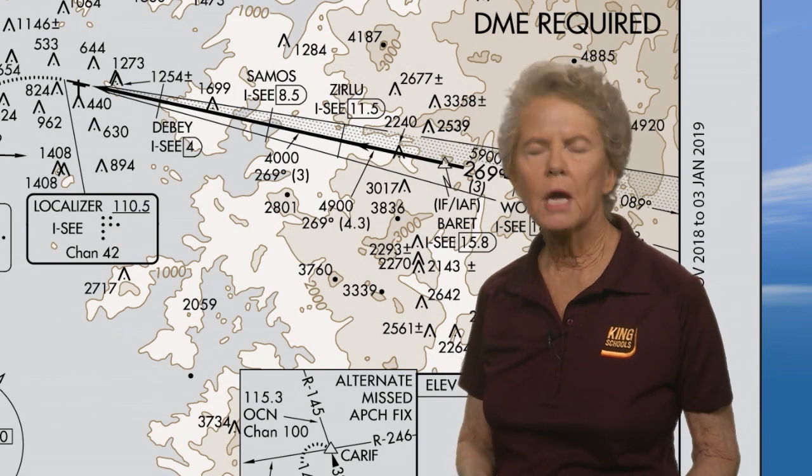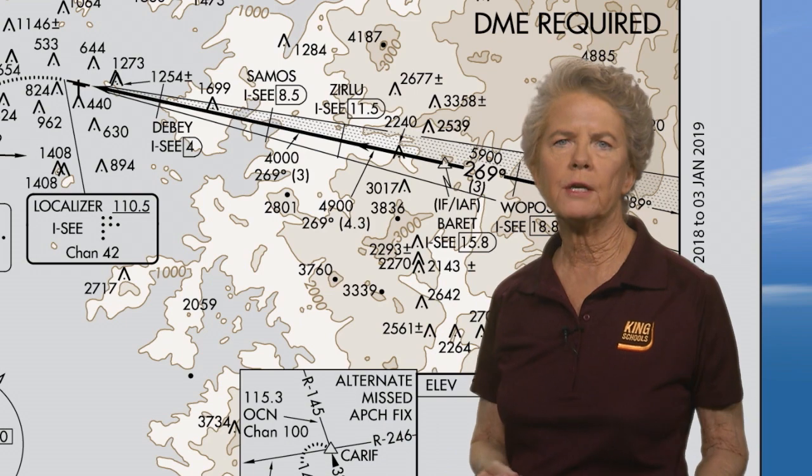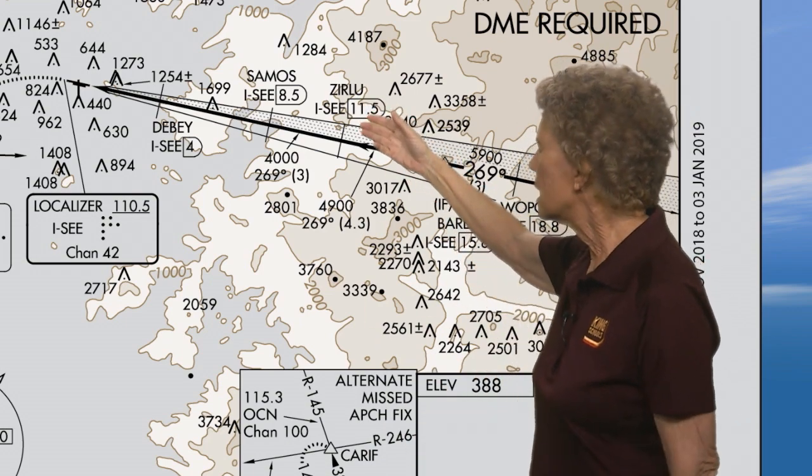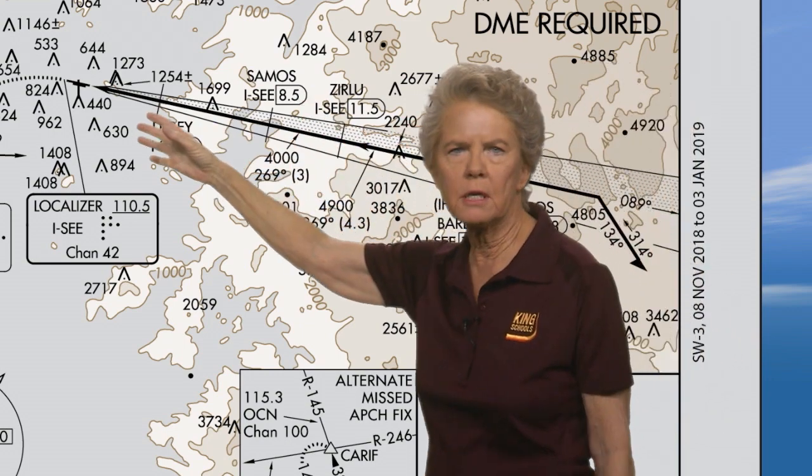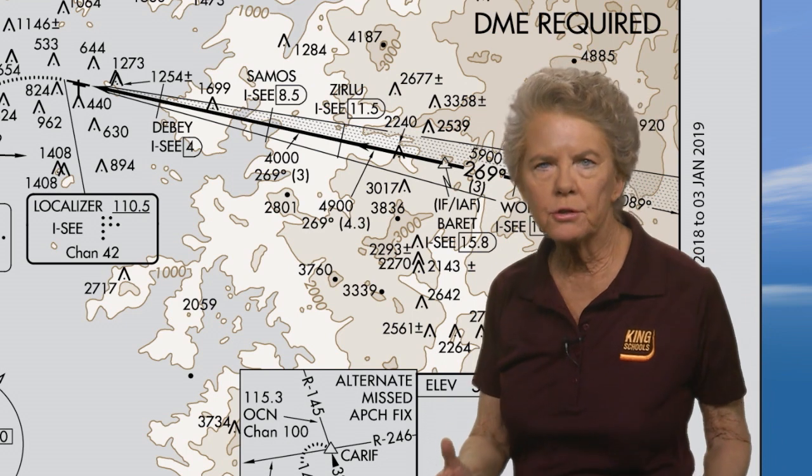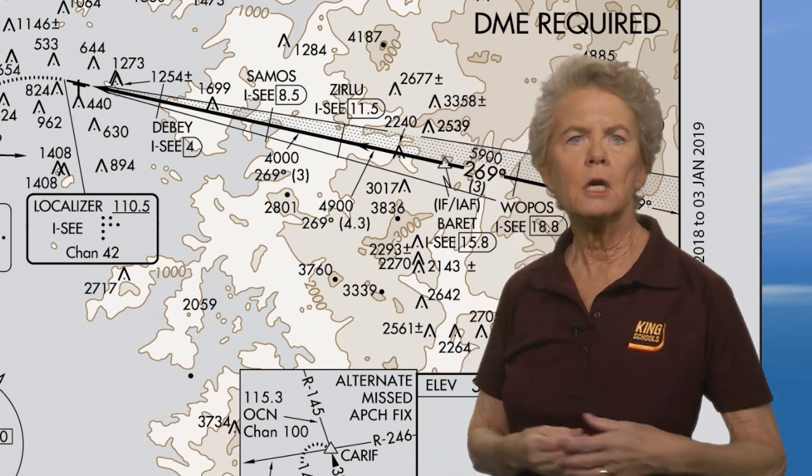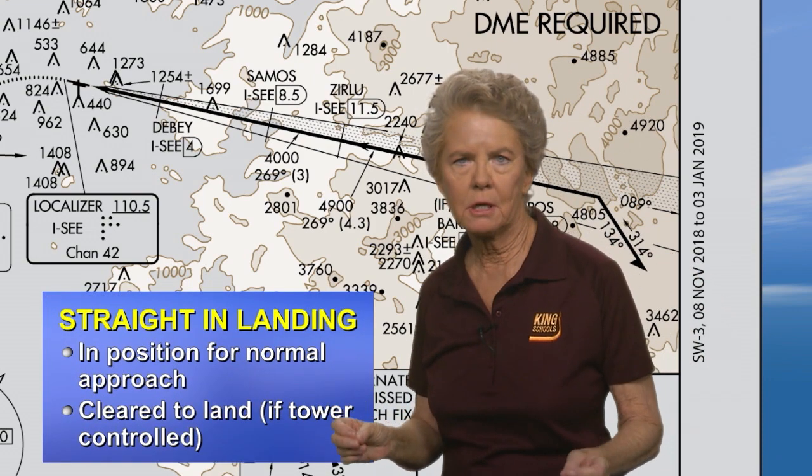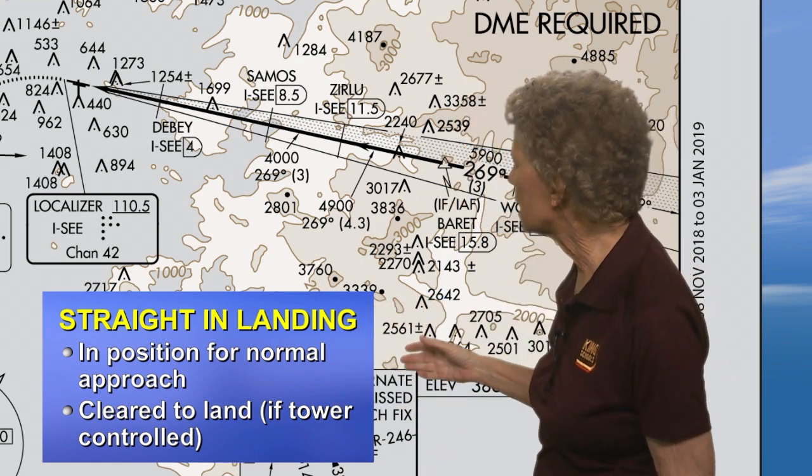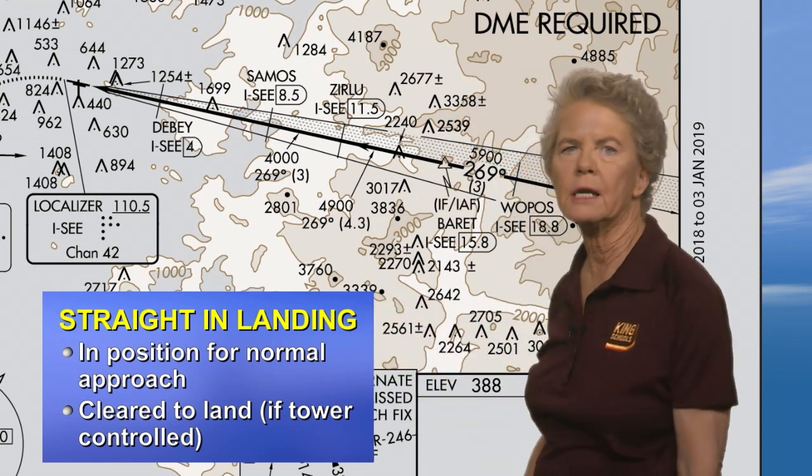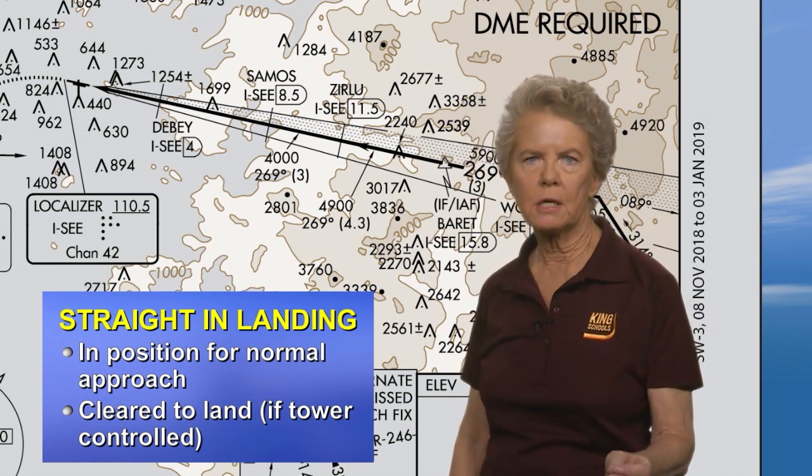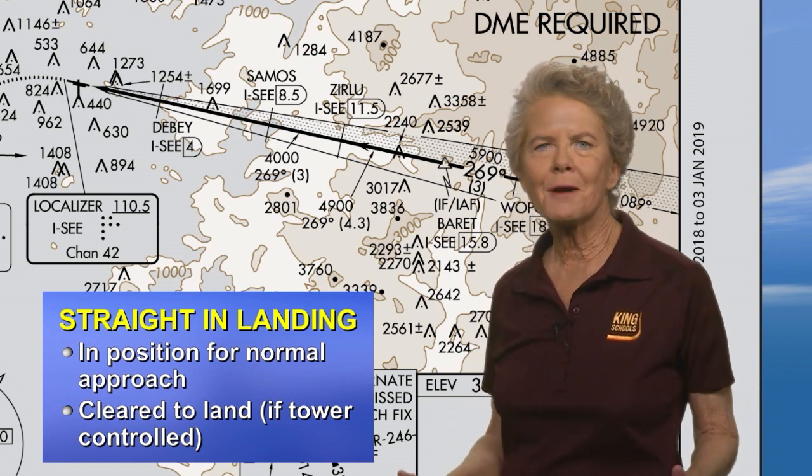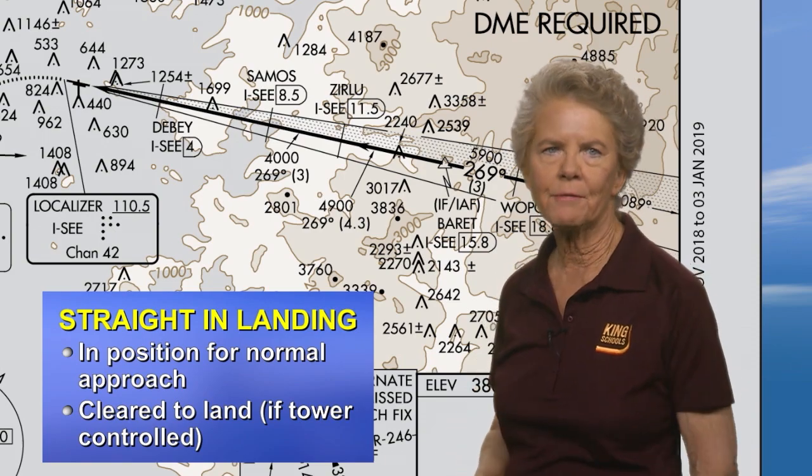But what if you're shooting this approach and you break out of the clouds before you reach that minimum altitude? In other words, you have the runway in sight and plenty of time to descend for a straight-in landing on that runway. Can you land straight-in or do you have to circle because there's only circling minimums shown? Well, logically, you can land straight-in provided you've got the runway in sight in time to make a normal approach for landing and you've been cleared to land straight-in if there is a tower that's open at the airport. If there's no tower, you don't worry about it. You just fit in with whatever the traffic flow is.